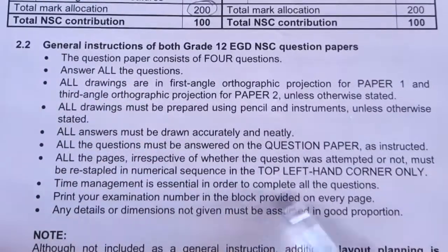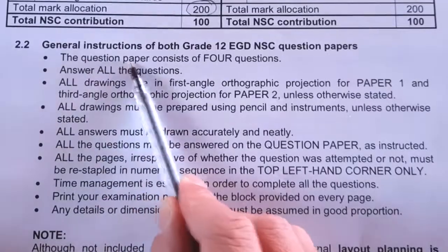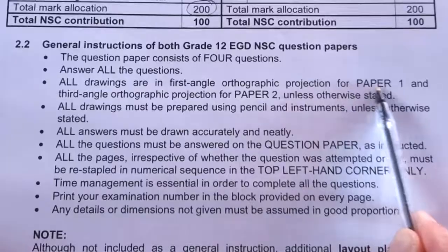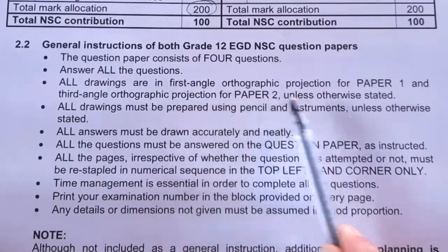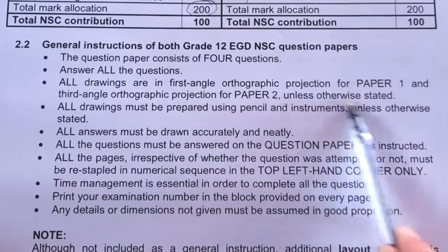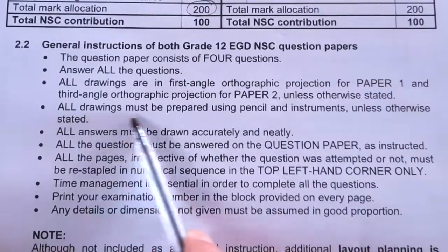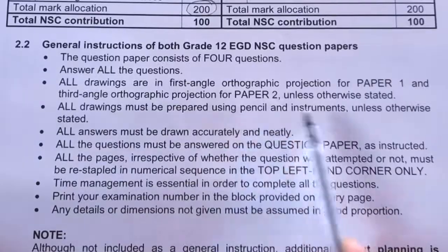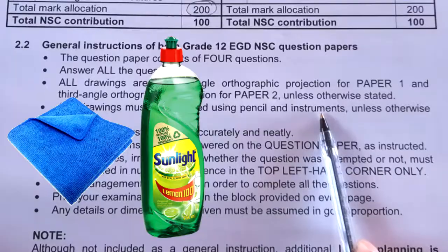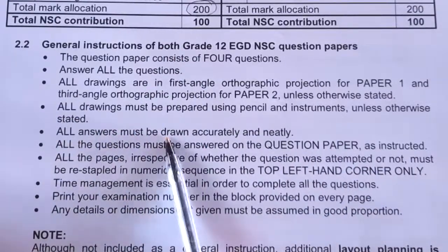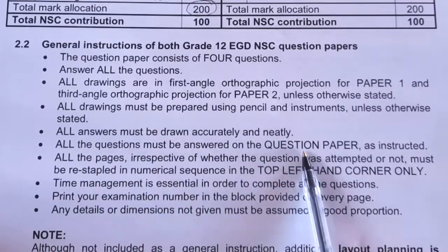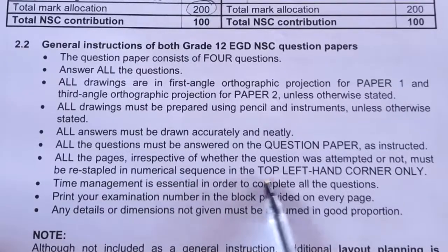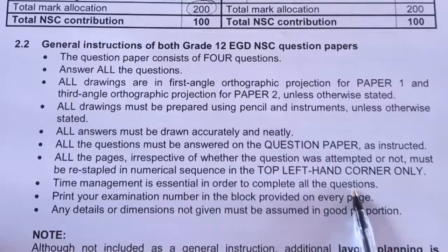Let's look at the general instructions on the actual papers. The question paper consists of four questions and you must answer all of them. All drawings are in first angle orthographic projection for Paper 1 and third angle for Paper 2 unless otherwise stated. All drawings must be prepared using a pencil — not coloured pencils — and your instruments. Make sure you wash your instruments before the exam with soap and warm water. All answers must be drawn accurately and neatly on the question paper as instructed. All pages, irrespective of whether attempted or not, must be restapled in numerical sequence on the top left-hand corner.